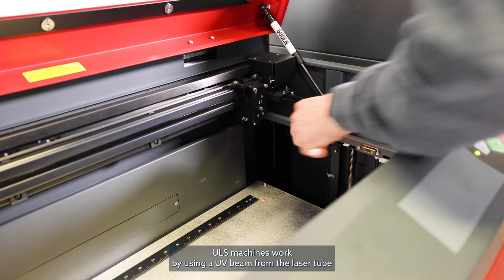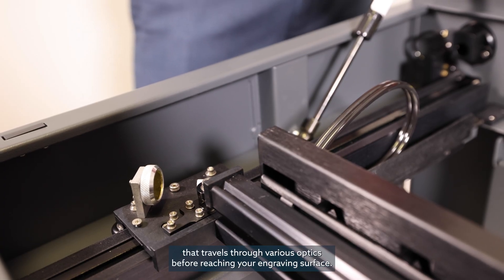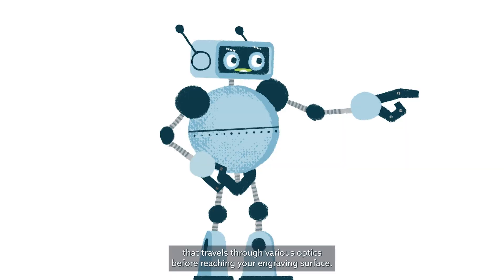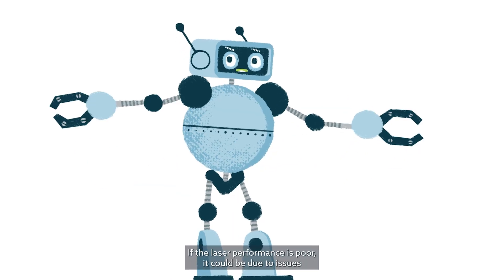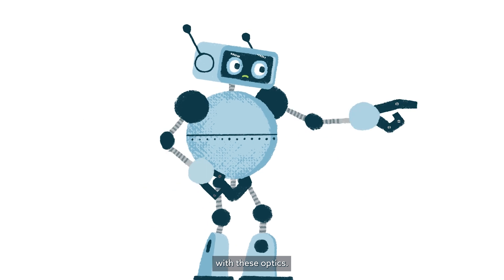ULS machines work by using a UV beam from the laser tube that travels through various optics before reaching your engraving surface. If the laser performance is poor, it could be due to an issue with these optics.